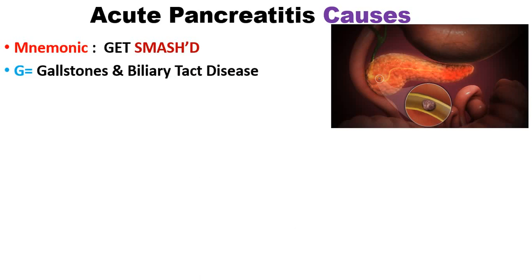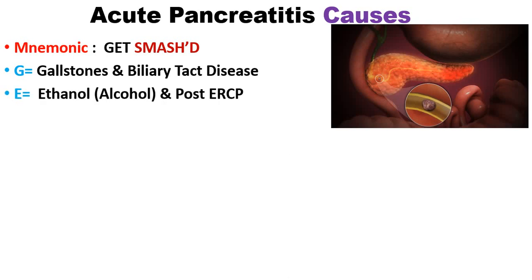G is for gallstones and biliary tract diseases — it is the most common cause, occurring when stones are present in the gallbladder. E is for ethanol or ethyl alcohol, and also E for ERCP — endoscopic retrograde cholangiopancreatography.